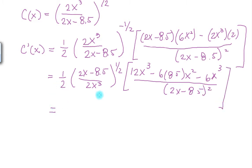Which becomes 1 half again. Now notice this term is equal to this term, and 1 half minus 2 is negative 3 halves. So let's write the top of the derivative, which is 12X cubed minus 6X cubed, which is 4X cubed minus 6 times 8.5 X squared.